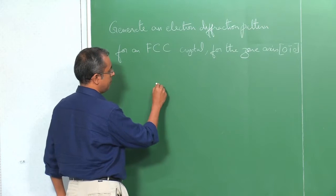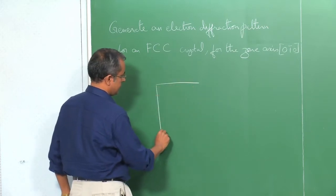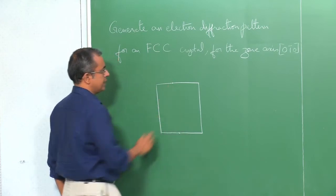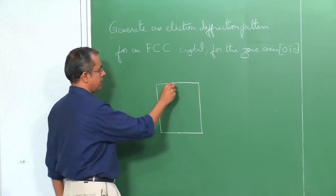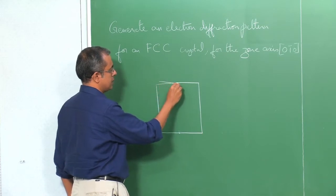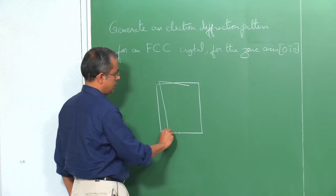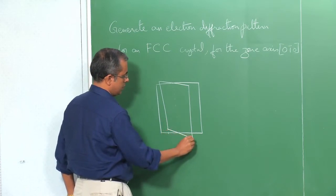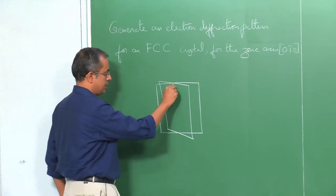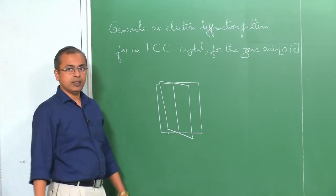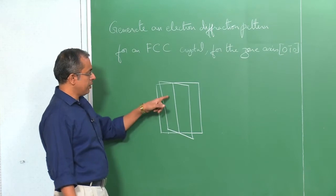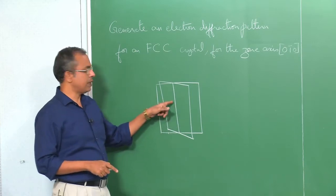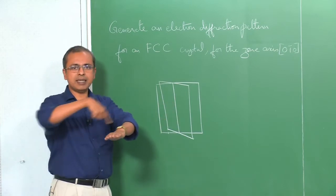Let us start with something called the zone axis. Basically, suppose you have a plane and another plane intersects it. Naturally, when two planes intersect — if they are not parallel — they are going to intersect along some line. I will put that line down here and we will say that this is another plane. So we now have two planes intersecting each other along this common line.